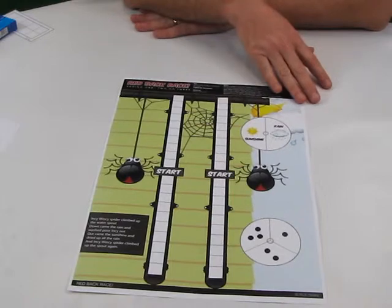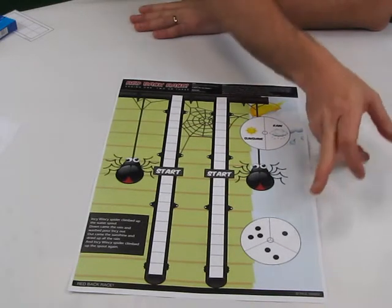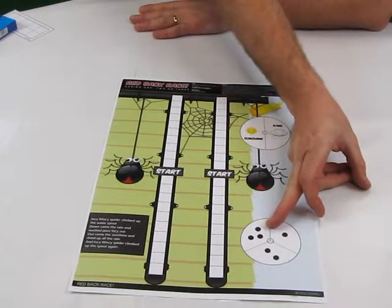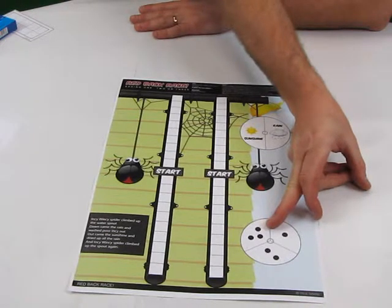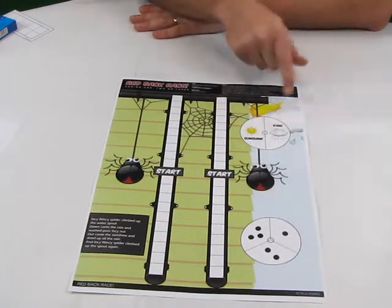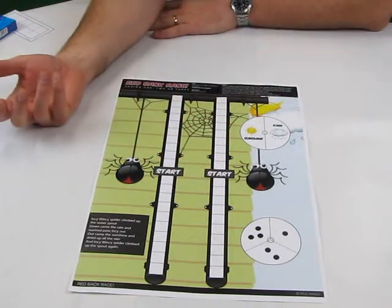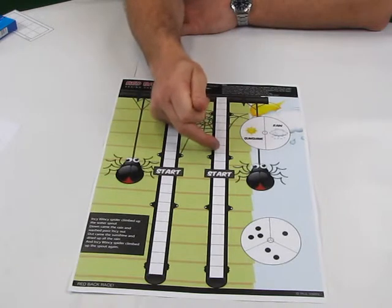This game here is designed for one purpose: to observe when children spin a three whether they're counting three or can they actually see three. In this game, you spin and if it's rain, you go down the downpipe. It's basically an incy wincy spider game. If it's sunshine, you move up.